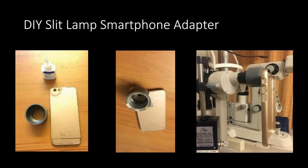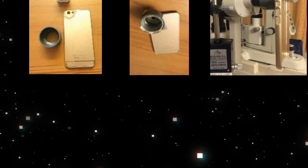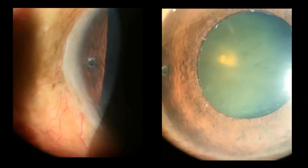This is a do-it-yourself slit lamp smartphone attachment made from commonly available material, making it a cost-effective option. It is attached to the back cover of the phone and the entire assembly is fixed to the eyepiece of the slit lamp. Here are a few of the anterior segment images taken with the smartphone.